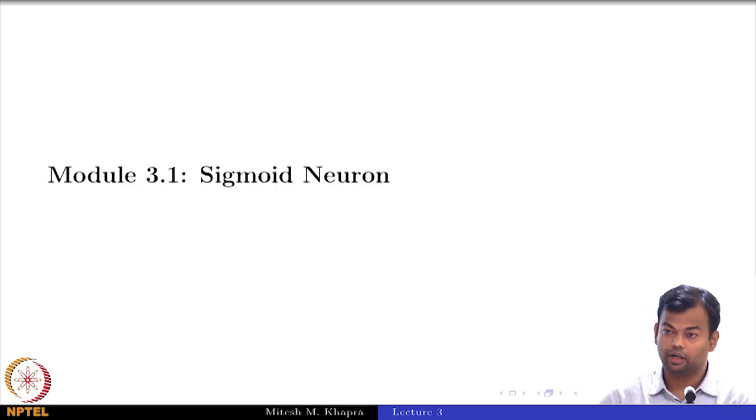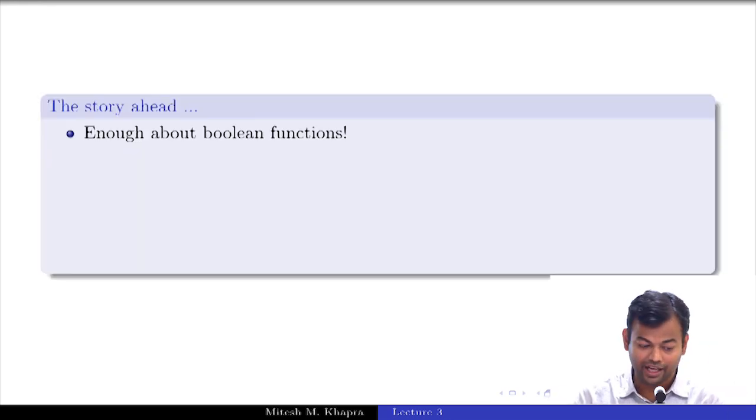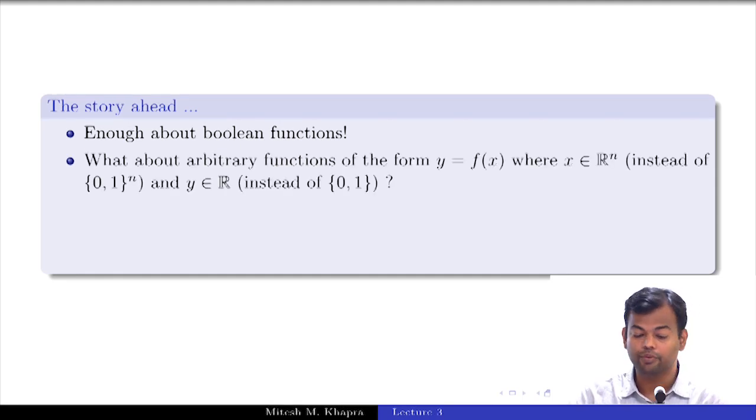We will start with module 3.1 which is on sigmoid neurons. The story ahead is that it's enough about Boolean functions. We have done a lot of Boolean functions, but now we want to move on to arbitrary functions of the form y equals f of x, where x belongs to R^n and y belongs to R. Let me explain this with an example.